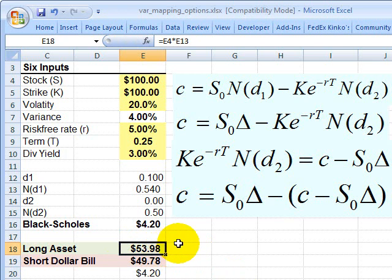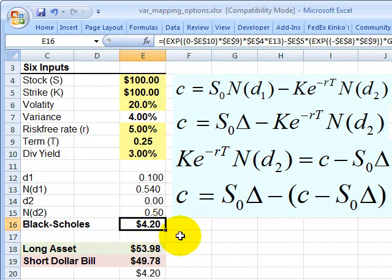And so it has to be true that the difference between these is our call option. But the point is, we've now taken a single position, a long position in a European call option. And the price or value of that call option today, that small c, is $4.20.